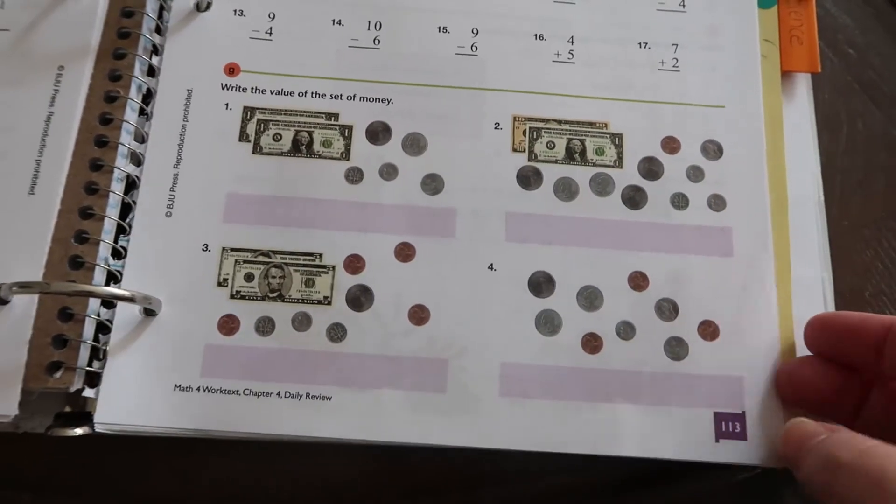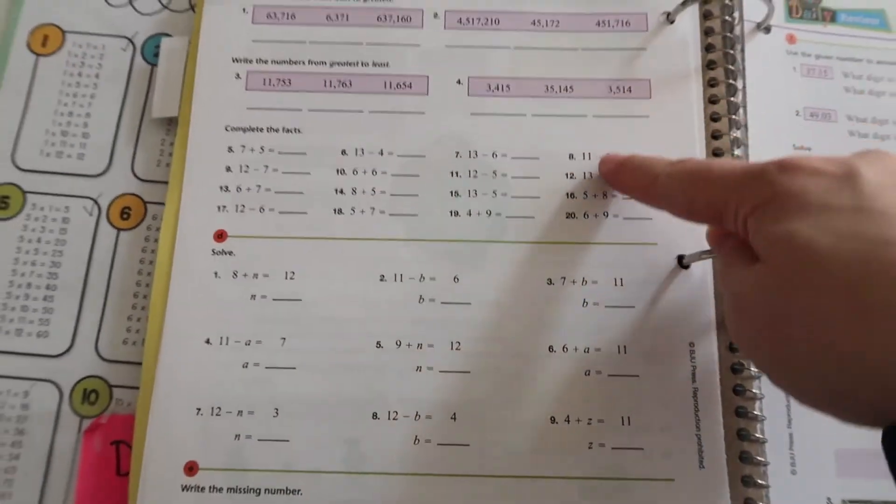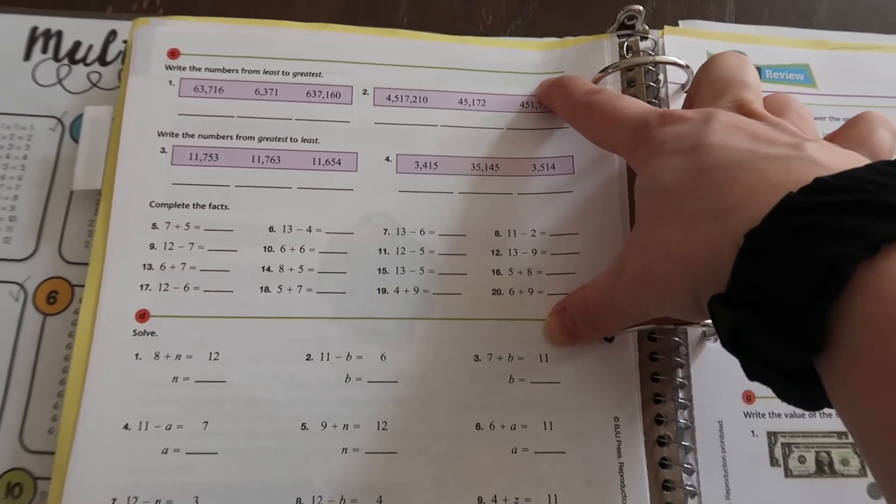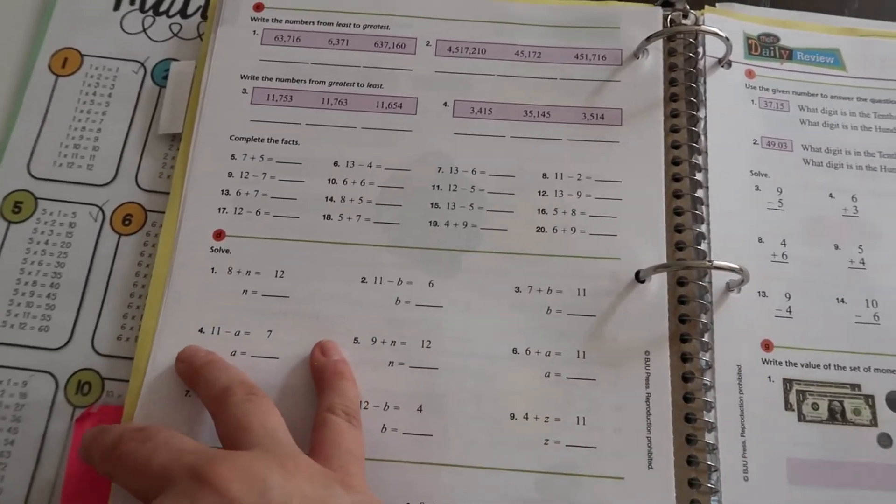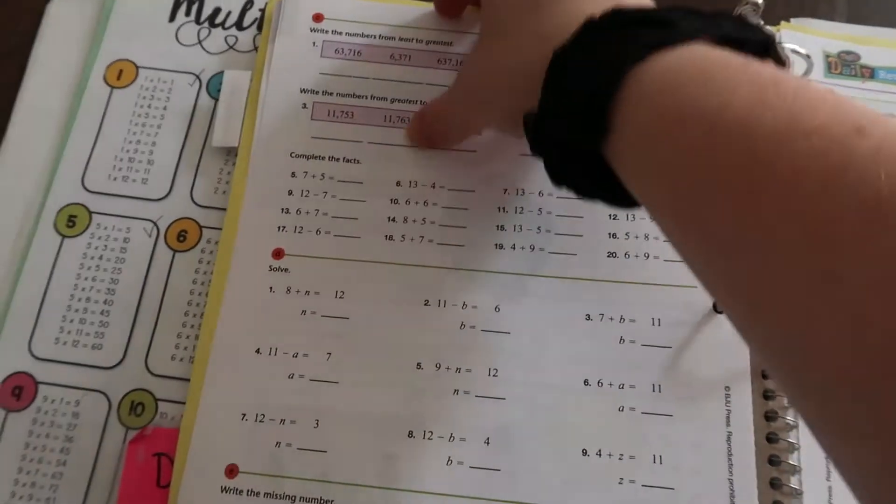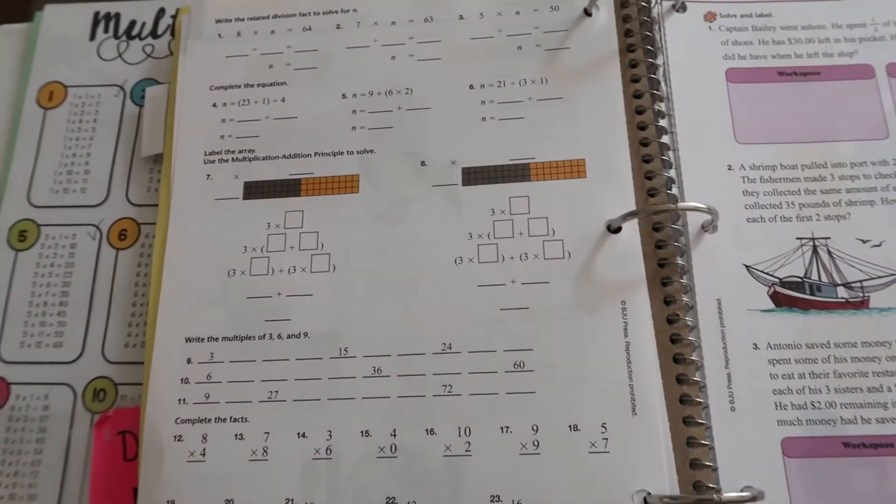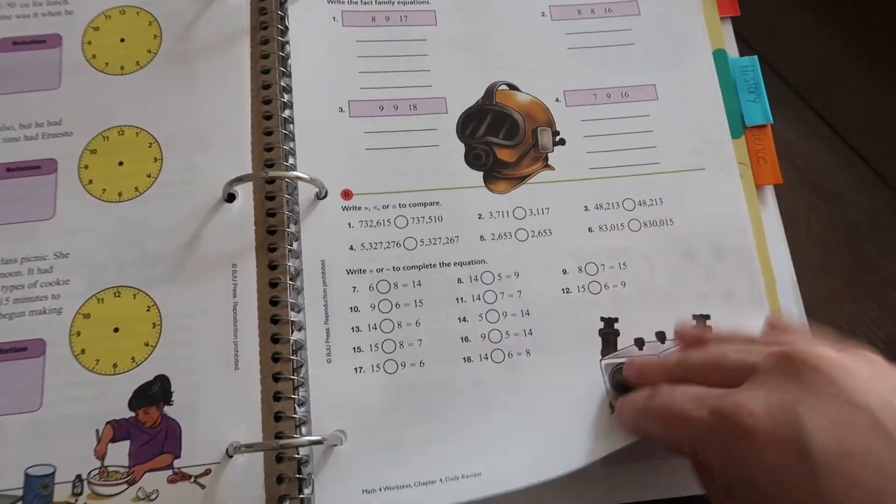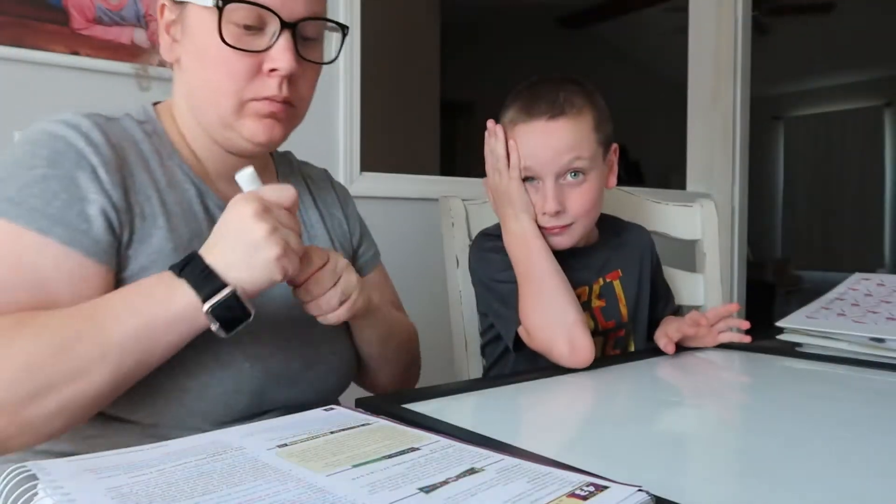Also, in this one, they have daily review not built in. So you actually have to complete daily review on a different page. So here would be the daily review that it would have him be doing, which isn't a lot. But then there's some days where these are a lot. This section right here would be a lot, especially when he has other things that he's learning. So I've started keeping these at the end.